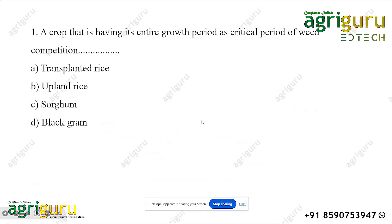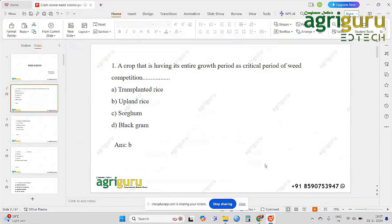First question: which crop has its entire growth period as a critical period of weed competition? The options are: transplanted rice, upland rice, sorghum, or black gram. The answer is option B.